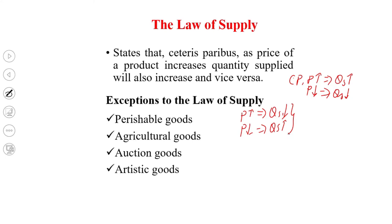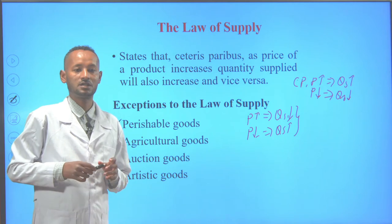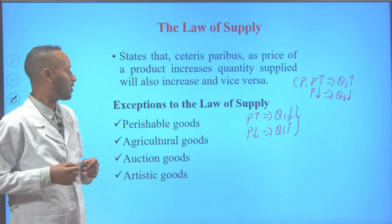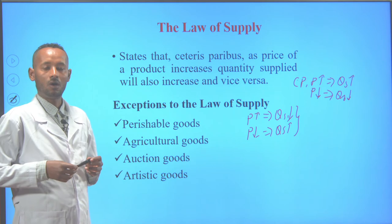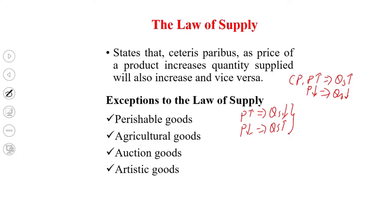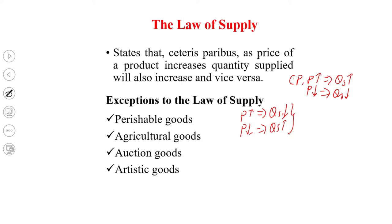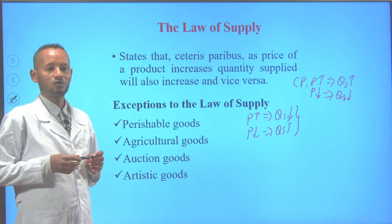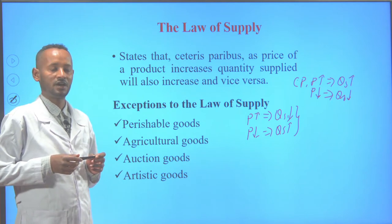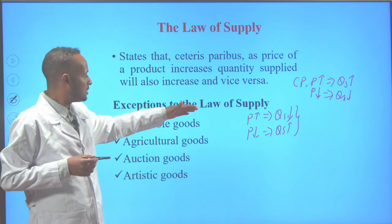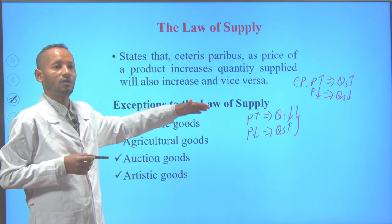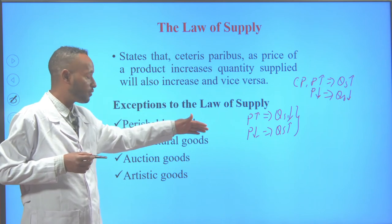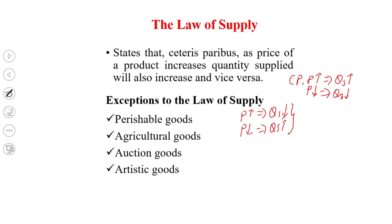One of the exceptions to the law of supply is perishable goods. Perishables are those goods that we cannot use for a long period of time, or those goods that lose their value when stored for a long period of time. For example, banana, orange, tomato — all these are considered perishables. So with a rise in the price of perishables, the quantity supplied may not increase, and with the falling of the price of perishables, the quantity supplied will not decline.